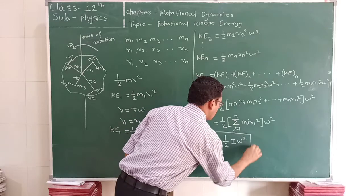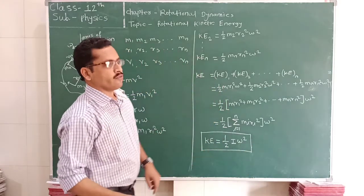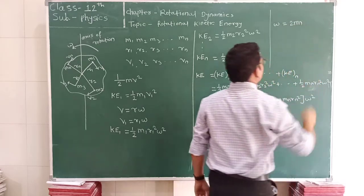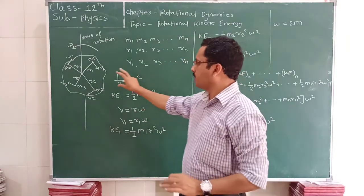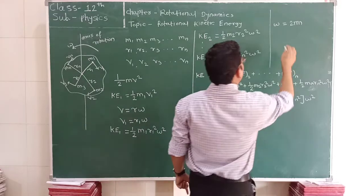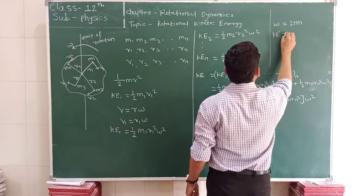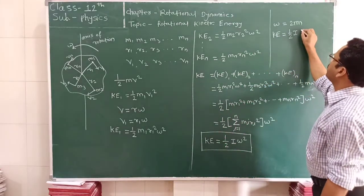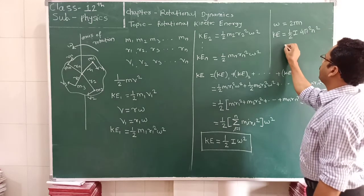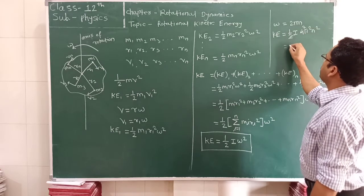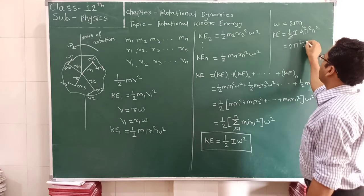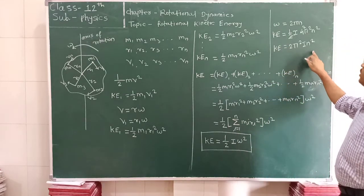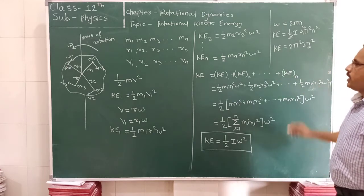Therefore, this is the required equation for rotational kinetic energy. We can modify this equation further. We know that ω = 2πn, where n is the number of rotations completed by the body in one second, that is, the frequency. Substituting, the kinetic energy equals ½I(2πn)² = ½I × 4π²n², which simplifies to 2π²In². So the rotational kinetic energy can also be calculated using this formula with the frequency of the body.